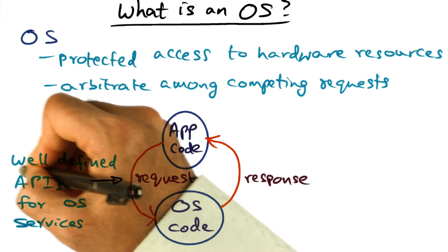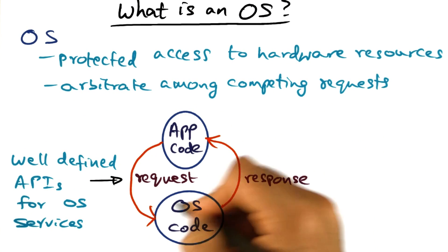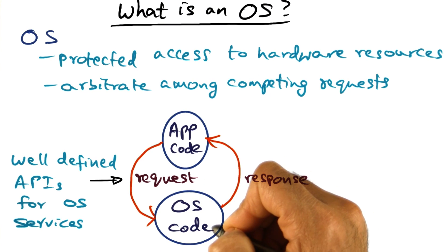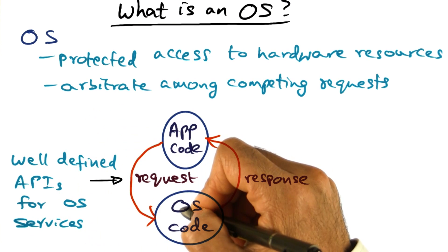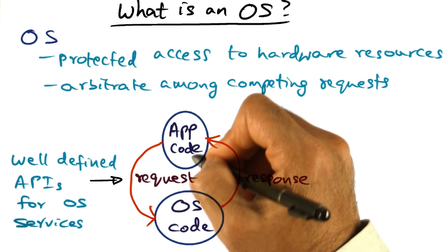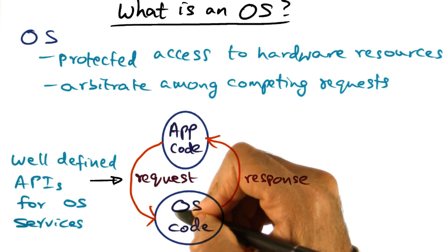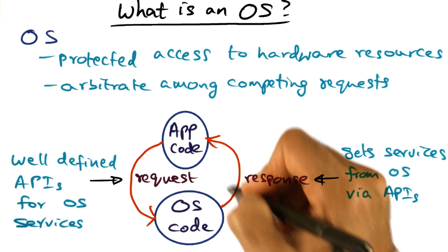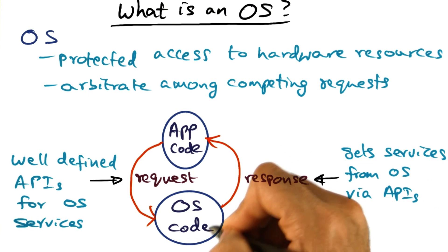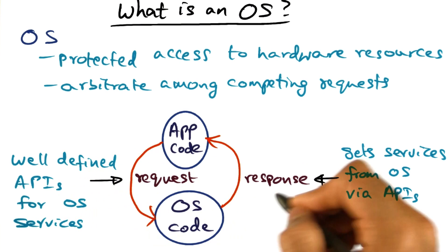What the operating system provides are well-defined APIs for accessing the hardware resources managed by the operating system. These resources are provided as operating system services through these well-defined interfaces. An application may make a request to the operating system for such hardware resources through this well-defined API interface, and the application gets the services from the operating system via these API calls.